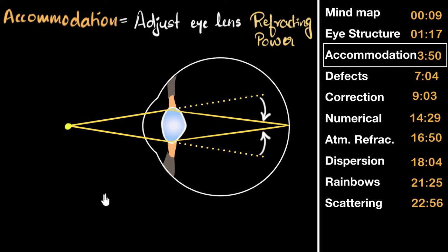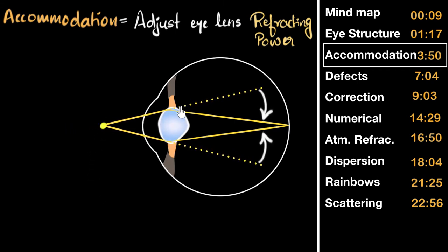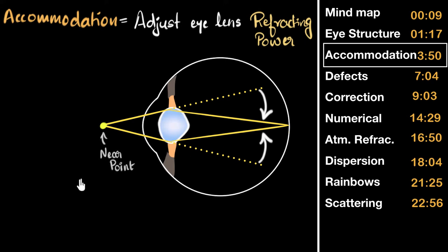But there's a limit to this. As the object comes closer, the ciliary muscles keep pushing on the lens, but after a point they just can't squash it anymore. If the object comes any closer than that limit, the lens won't become any more bulged and the rays will no longer get focused onto the retina. This nearest point at which we can still clearly see is called the near point. The average near point of the human eye is about 25 centimeters — it's good to remember this number.